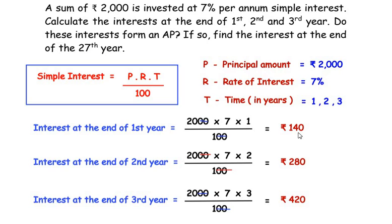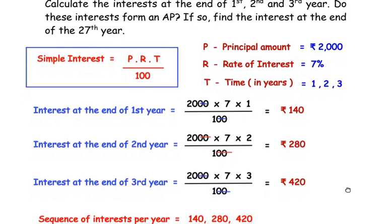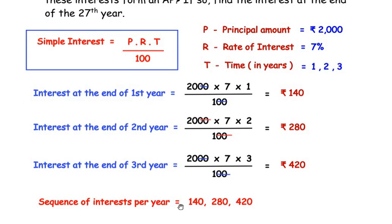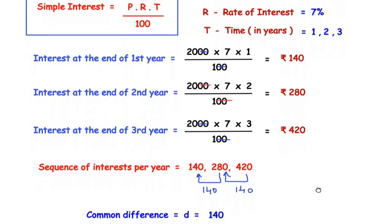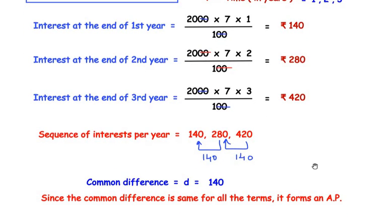Now we have to check whether the interests form an arithmetic progression. The sequence of interests per year is 140, 280, and 420. The second term minus the first term: 280 − 140 = 140. The third term minus the second term: 420 − 280 = 140. The common difference d = 140 is the same for all terms, so the sequence forms an AP.